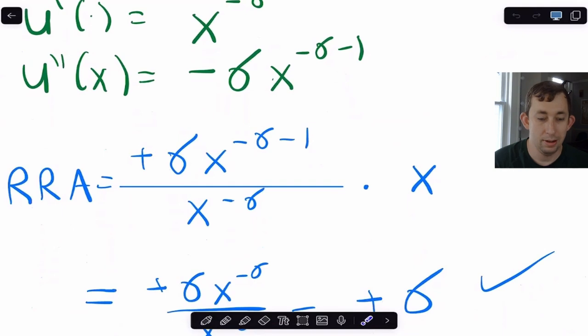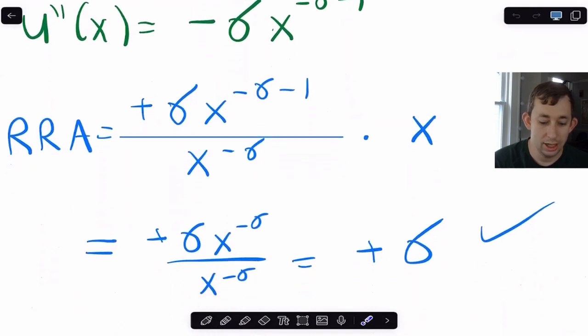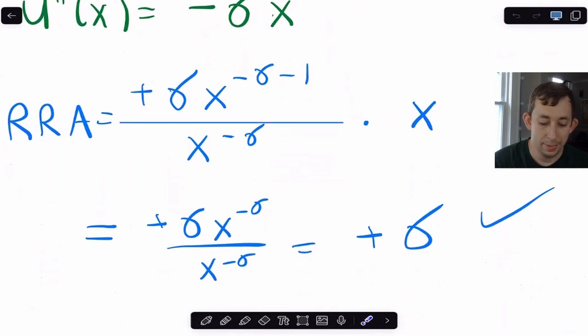So now I am going to find my relative risk aversion, where I put the second derivative on top, I put the first derivative on the bottom, and I multiply it by x.